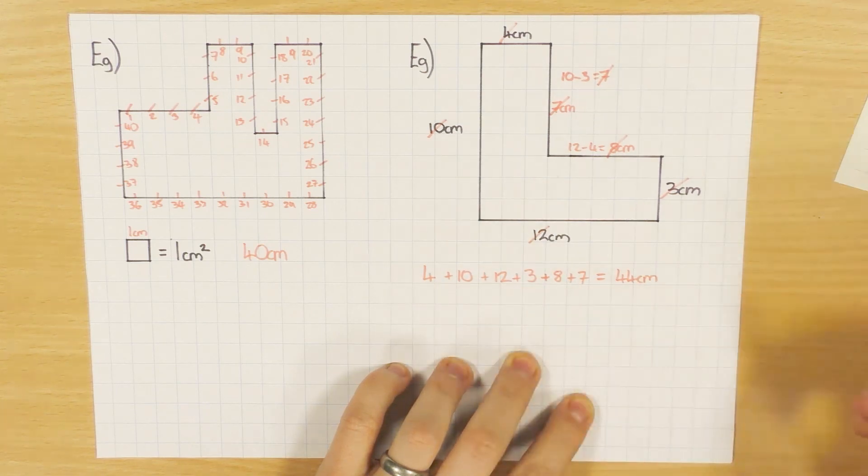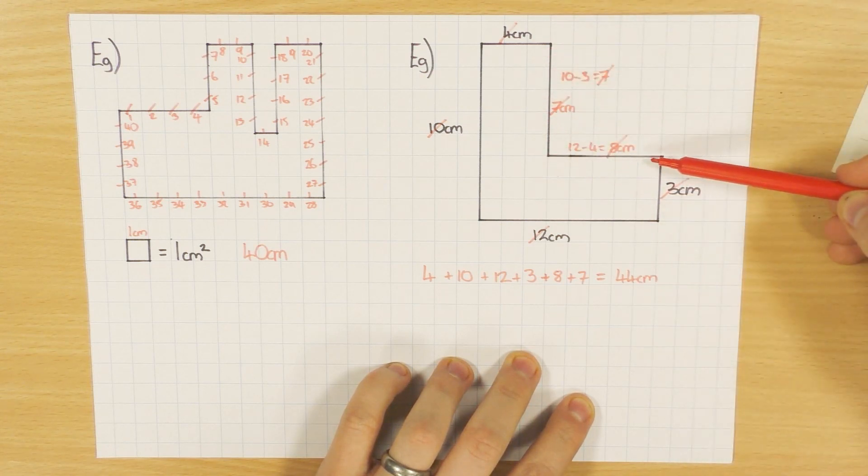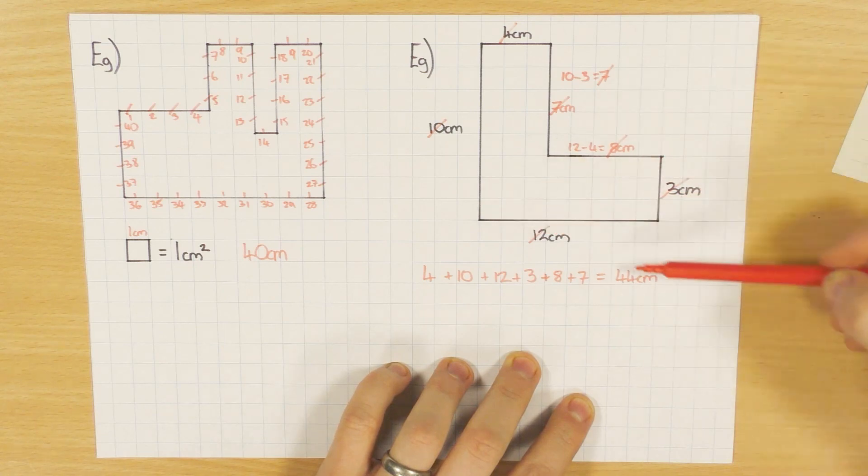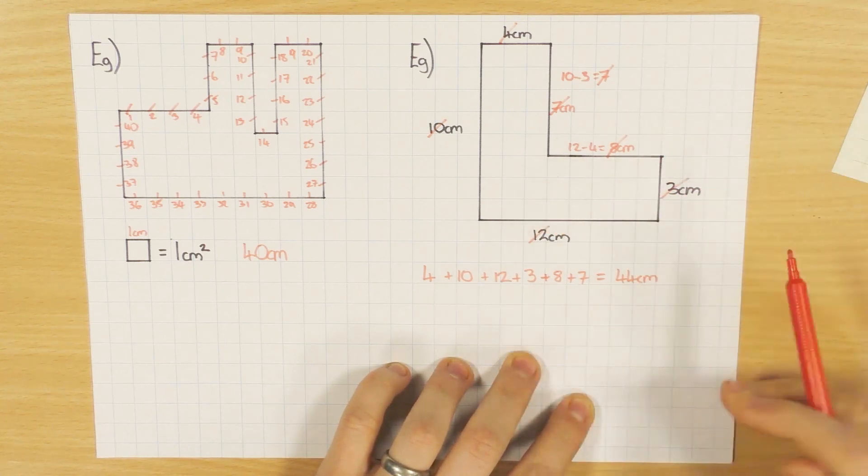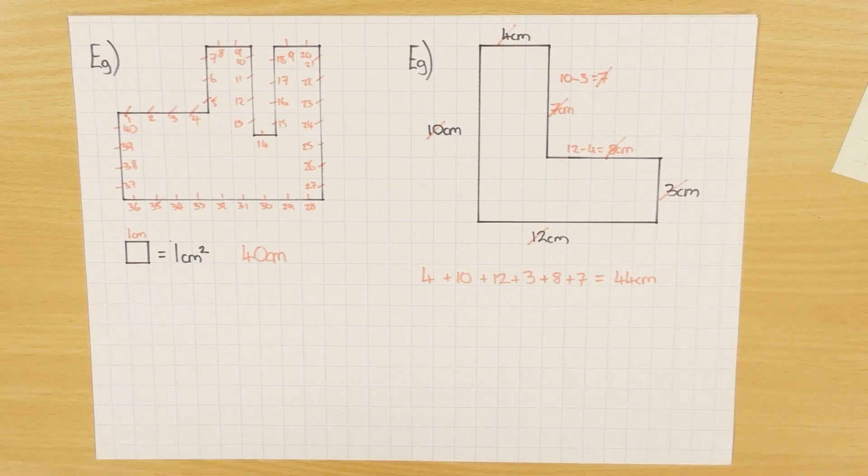So a couple of things to watch out for: find the missing lengths if there are any, make sure you show your units, and show your work. If you do that, you should get these questions right every single time. Thanks for watching.